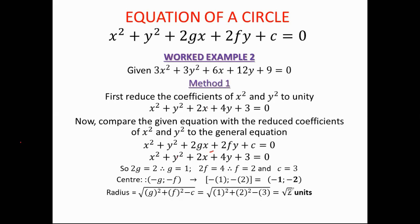I got root 2 — yes, that's correct. The center was negative 1 to negative 2. But when using the general equation you have a specific formula for the center — negative g to negative f — and I forgot the negative signs.